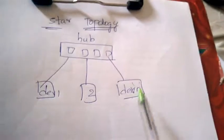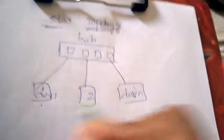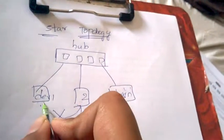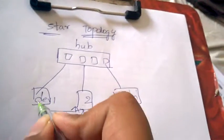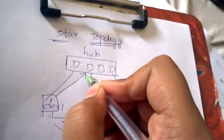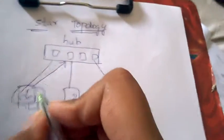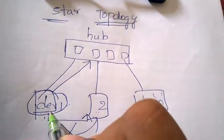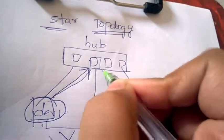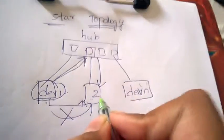This is device one, this is device two, and this is device N. If device one wants to transfer information to the remaining devices, it cannot directly transfer because there is no direct connection to another device. So this device will first transfer the information to the hub, and the hub will check which device the information is intended for. From the hub, the information will be transferred to device two, reaching from device one to device two.